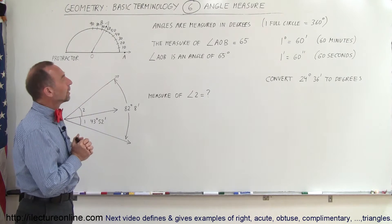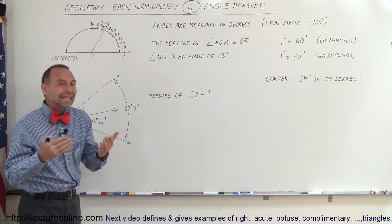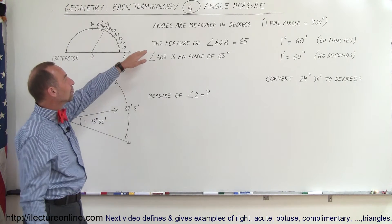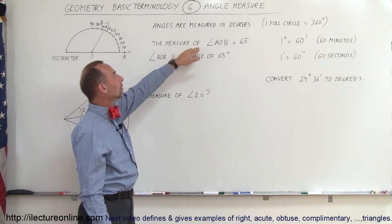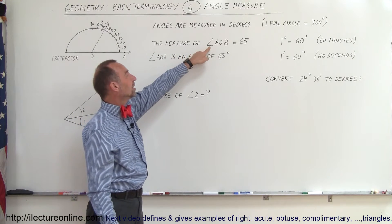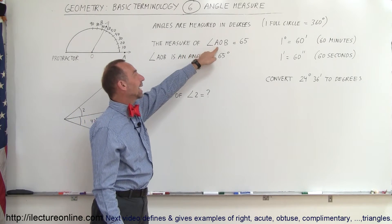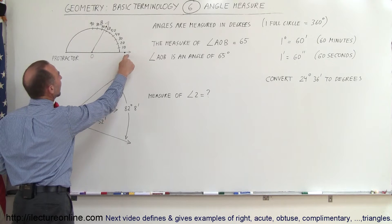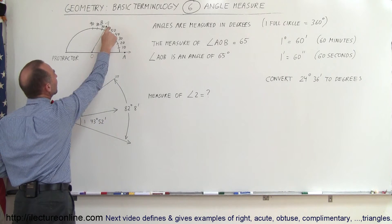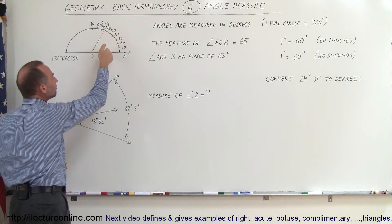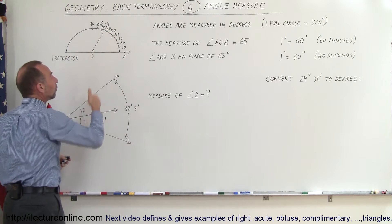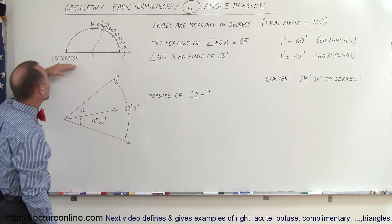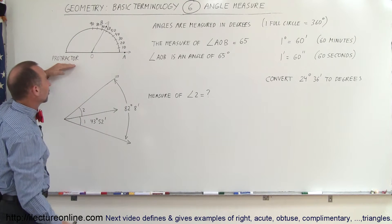Alright, how do we indicate that mathematically in geometry? We can write the measure of an angle — here's an indication of angle AOB. We have an angle from A to O to B, and we can measure that angle. One way to measure an angle would be with what I call a protractor.